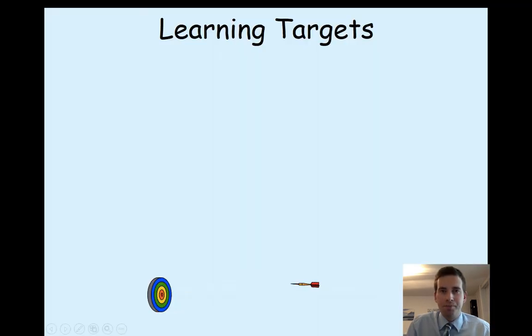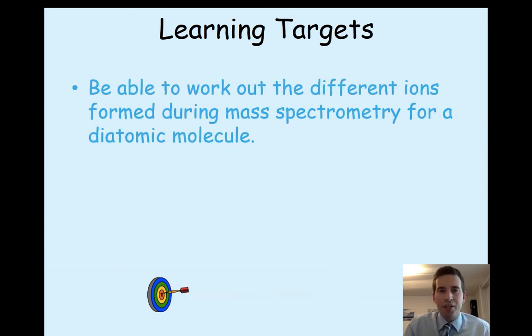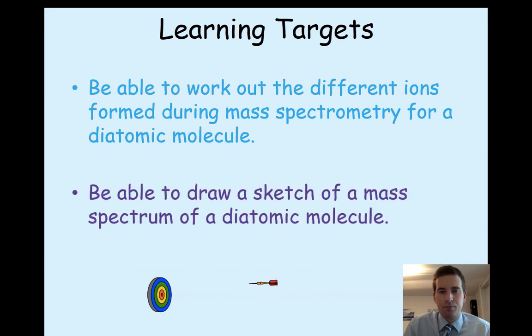Hopefully, you should be able to work out and represent the different species which are produced and detected during mass spectrometry. And hopefully, you should be able to sketch mass spectra for these diatomic molecules, remembering the pattern and the differences in relative abundance. If you're unclear about any of this, you can watch the video again and make sure you ask me about it in class.